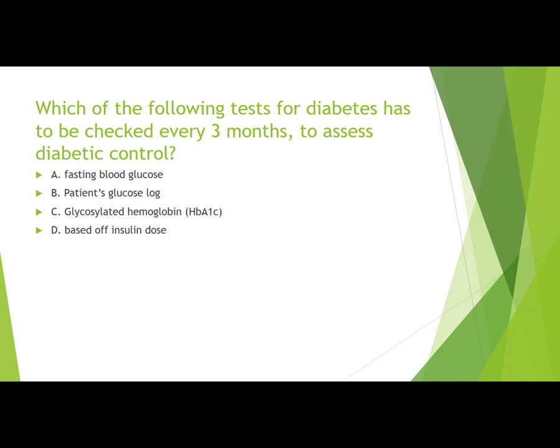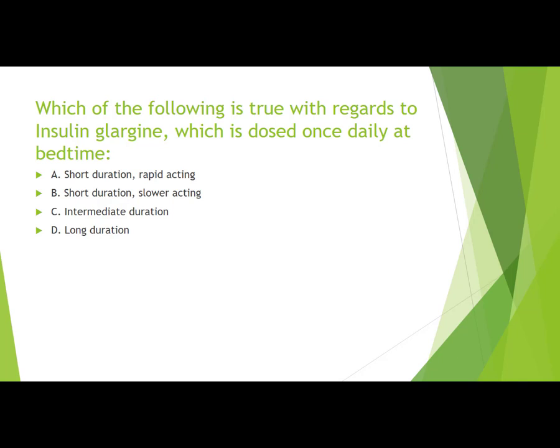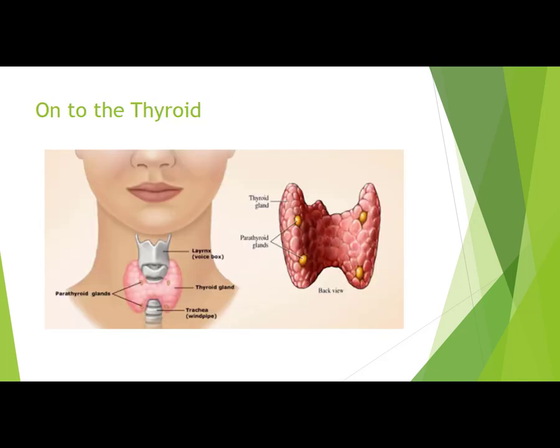Case 4: Which test for diabetes must be checked every three months to assess diabetic control? The answer is glycosylated hemoglobin, or HbA1c. Case 5: Which of the following is true about insulin glargine, which is dosed once daily at bedtime? The answer is long duration — insulin glargine is a long-duration type of insulin.